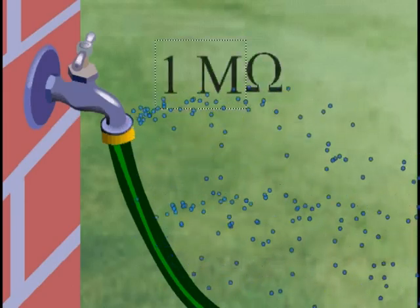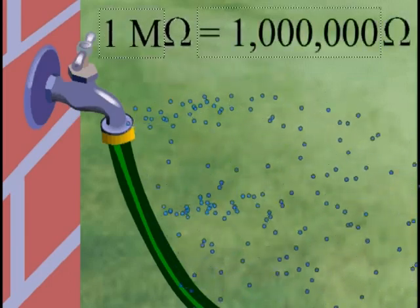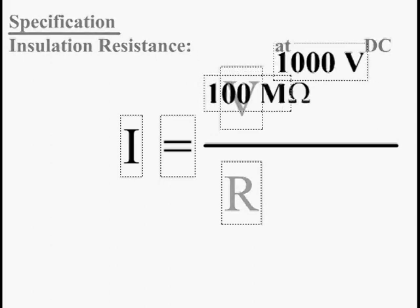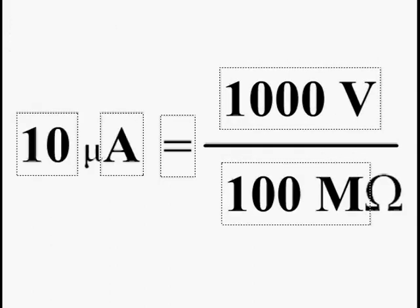In cable testing, this setting is usually specified in mega ohms or millions of ohms. For example, if you have a spec that requires a minimum of 100 mega ohms of insulation resistance at a thousand volts DC, using Ohm's law, the maximum amount of current that can leak from any wire before we call it bad is 10 microamps.